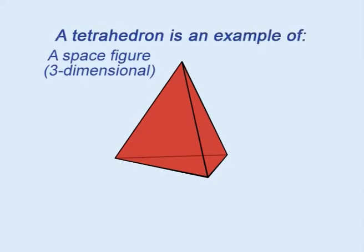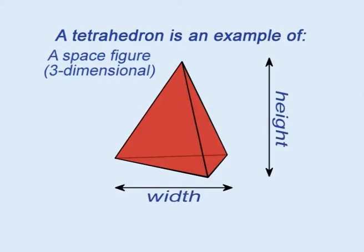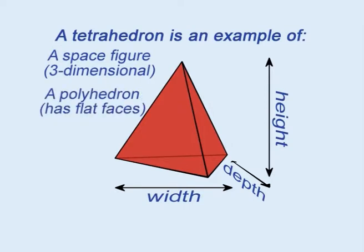A tetrahedron is an example of a space figure, or figure that has height, width and depth. It is also an example of a polyhedron, or three-dimensional figure with flat faces.